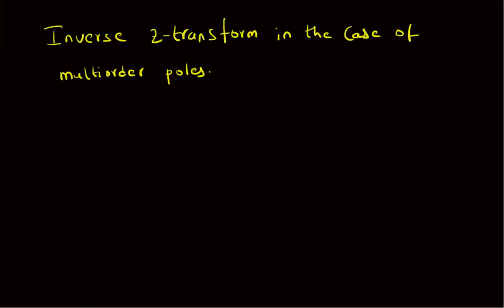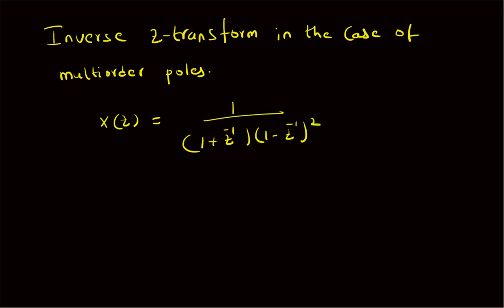Hello, welcome. In this short video, let us look at an example illustrating the evaluation of the inverse z-transform in the case of multiple order poles. We consider an example where X(z) = 1 / [(1 + z⁻¹)(1 - z⁻¹)²], which means we have two poles at z = 1. So how do we find the inverse z-transform? Let us look at that.